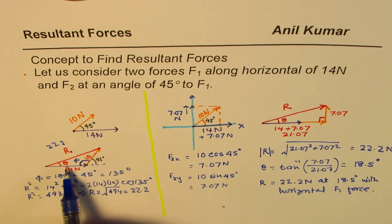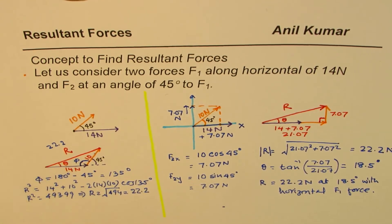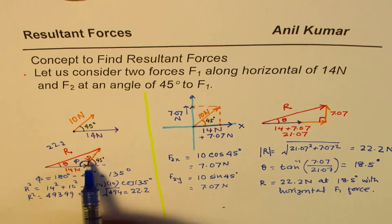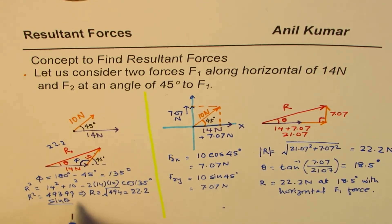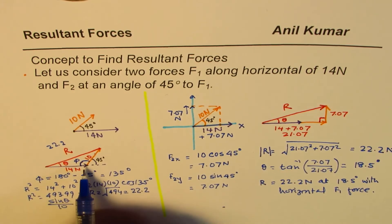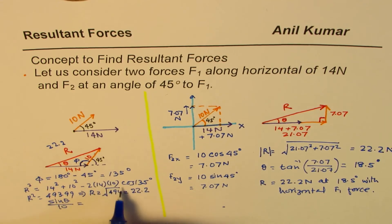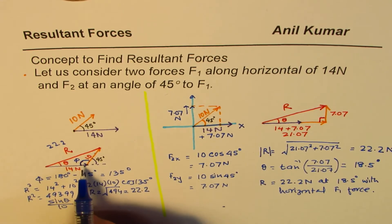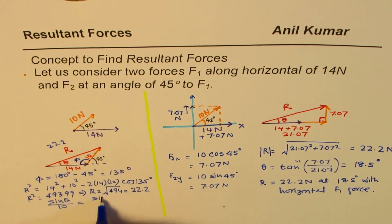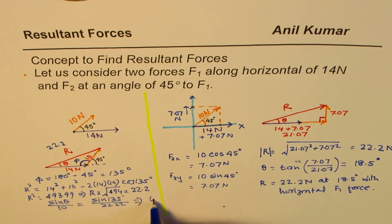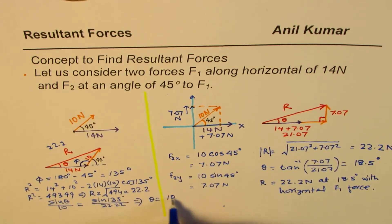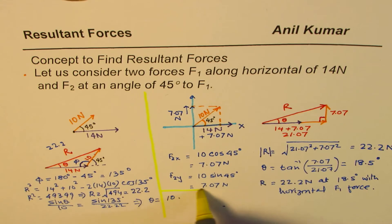To find the angle theta, we use the sine law. We write sine theta over the opposite side 10 equals sine 135 degrees divided by the side we just calculated, 22.22. From here, theta equals sine inverse of 10 times sine 135 degrees divided by 22.22.